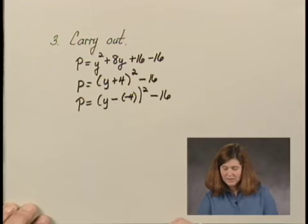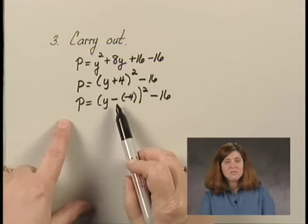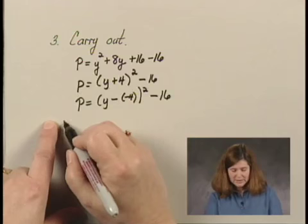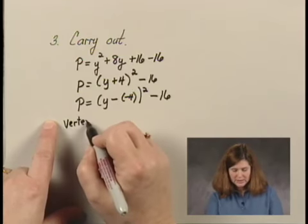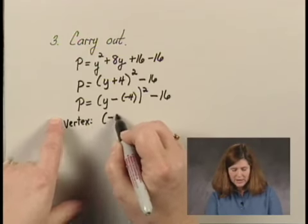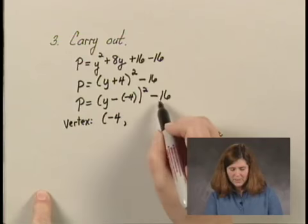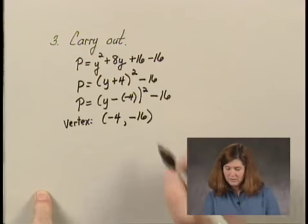Now, notice I can write this as p equals y minus a negative 4 squared, minus 16. I write it that way so that I can read the vertex. The vertex is negative 4 from here, negative 16 from here.